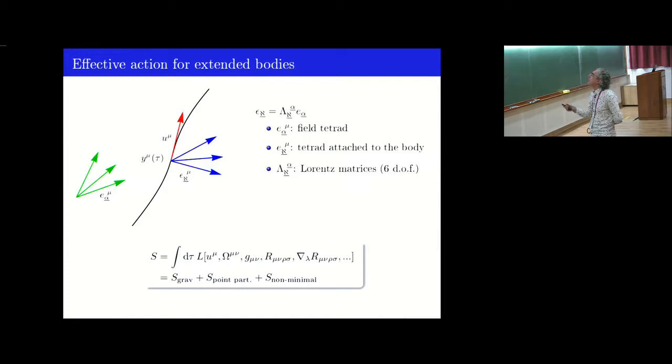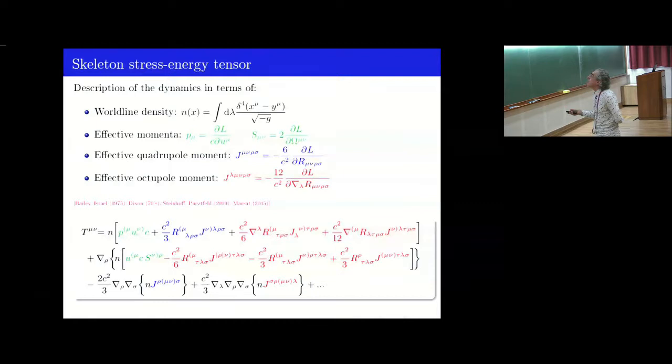The bodies are modeled by point particles. So, this is the worldline of one such particle, Y mu, with four-velocity U mu. There is a tetrad attached to the body. There is a fixed tetrad, and you can relate them with Lorentz matrices. You can construct omega mu nu from that. And the most general action of your system, this is an effective action, must depend on the four-velocity, omega mu nu, the metric, the Riemann tensor, and its derivative. And so, you see, it contains, in principle, non-minimal parts, taking into account the finite-size effects.